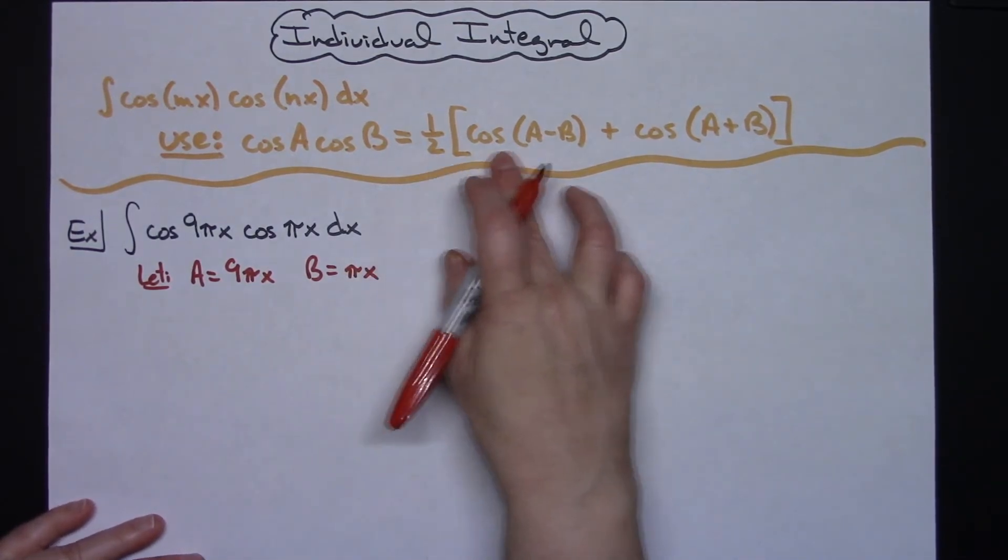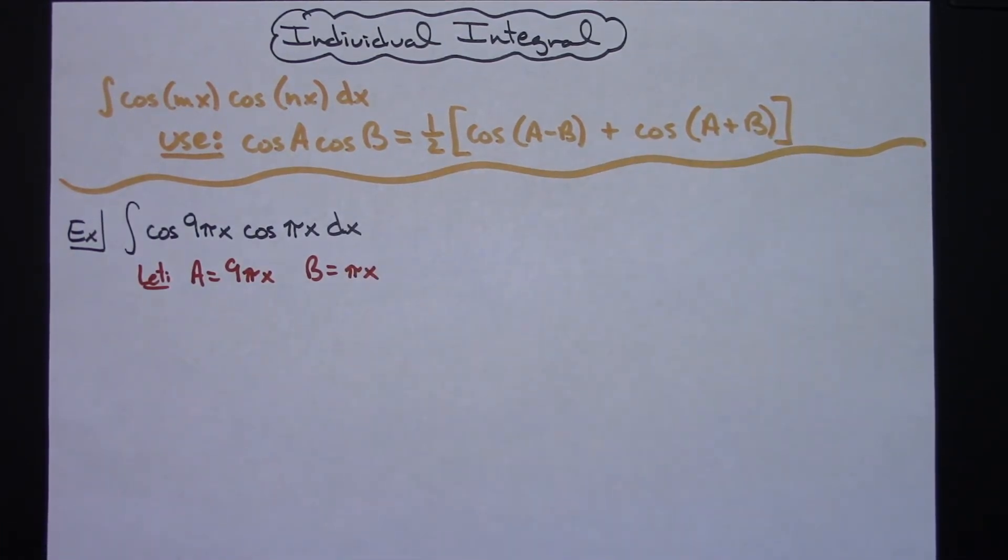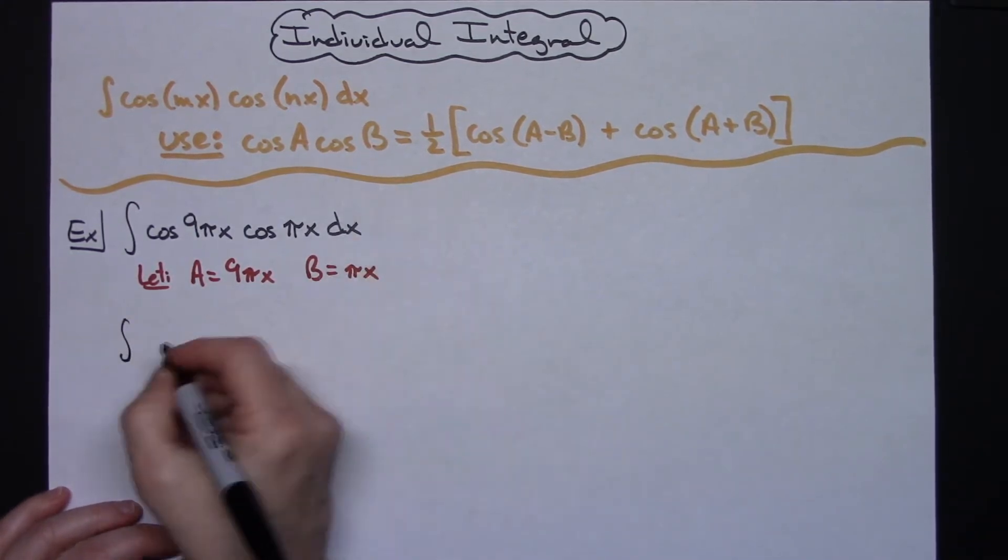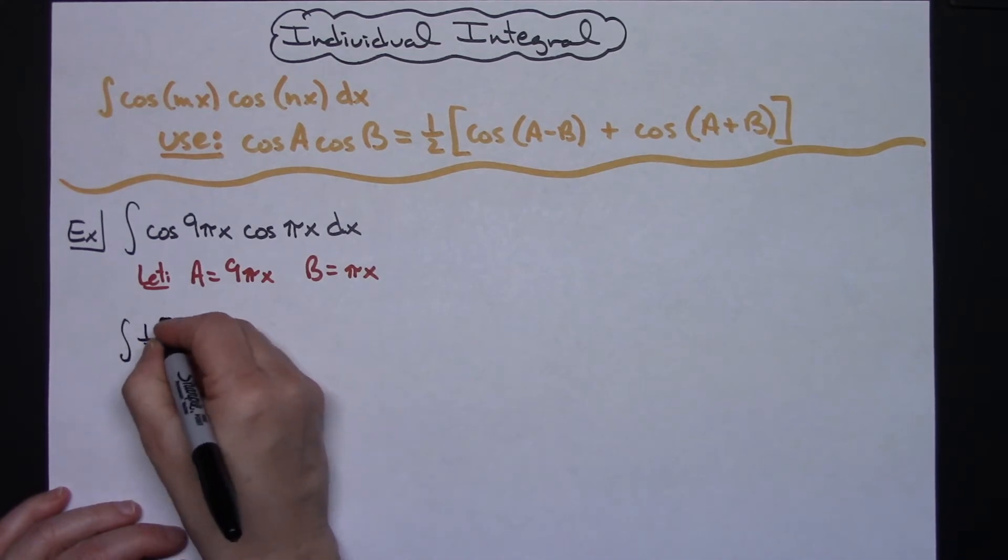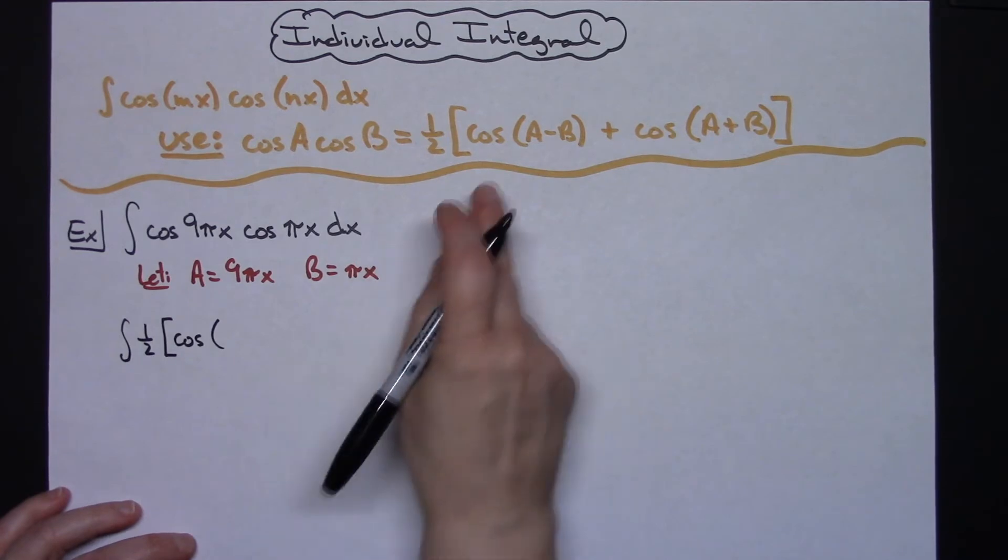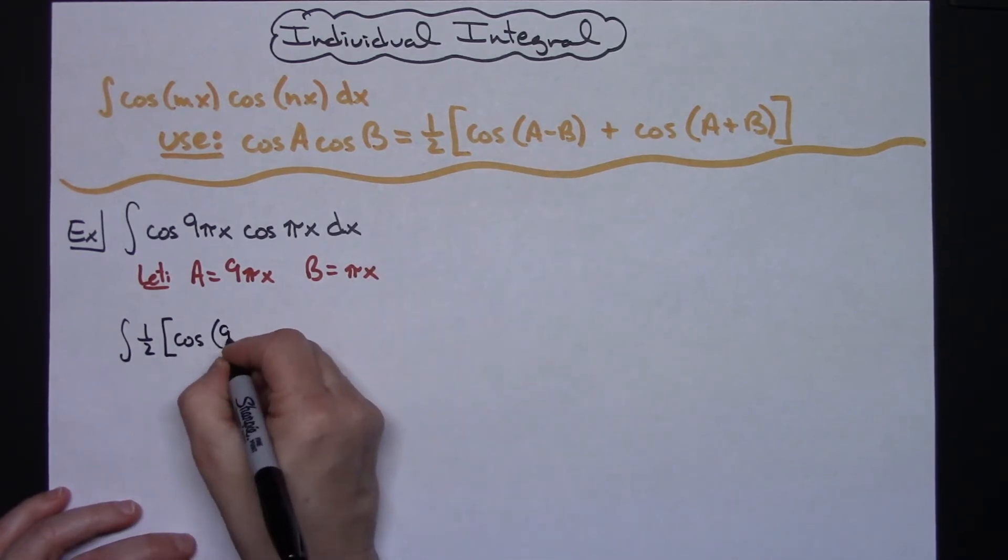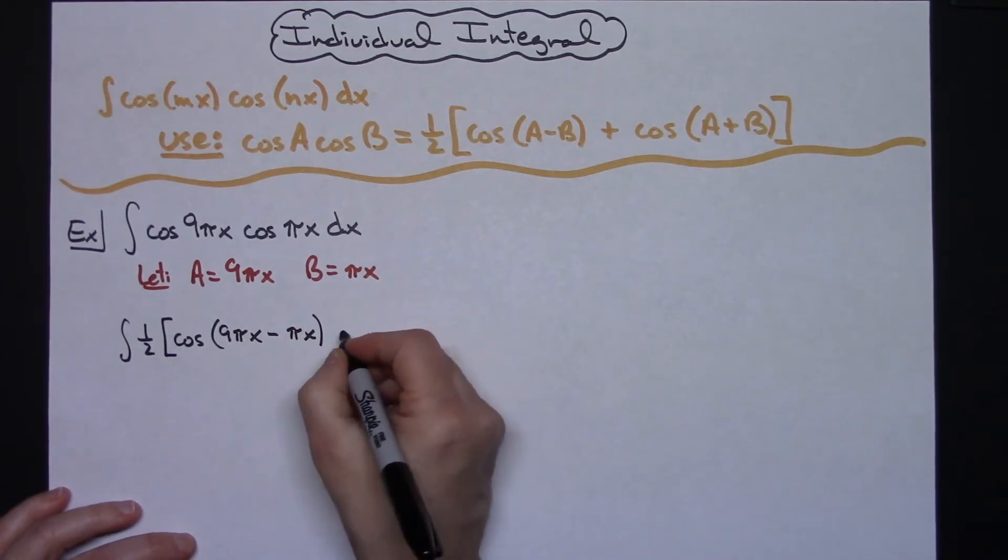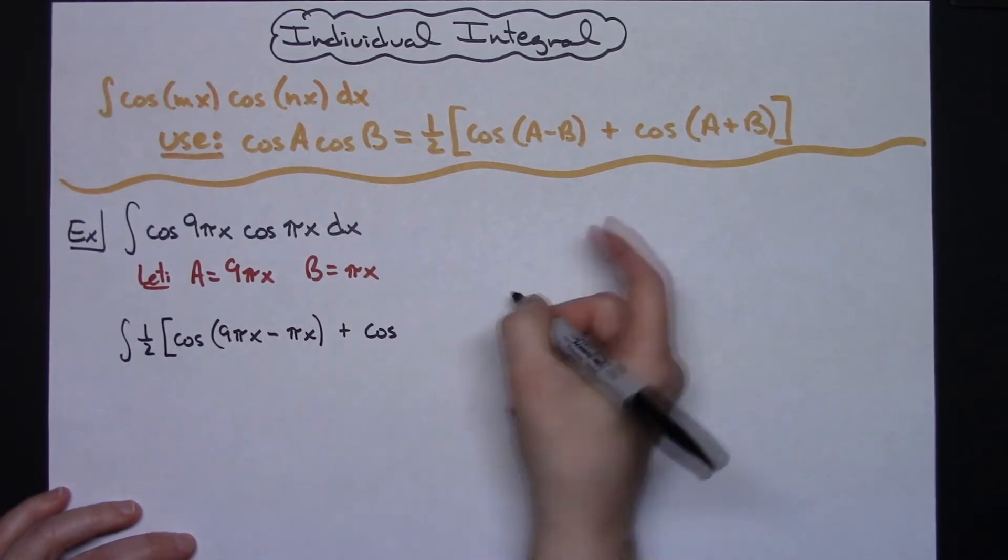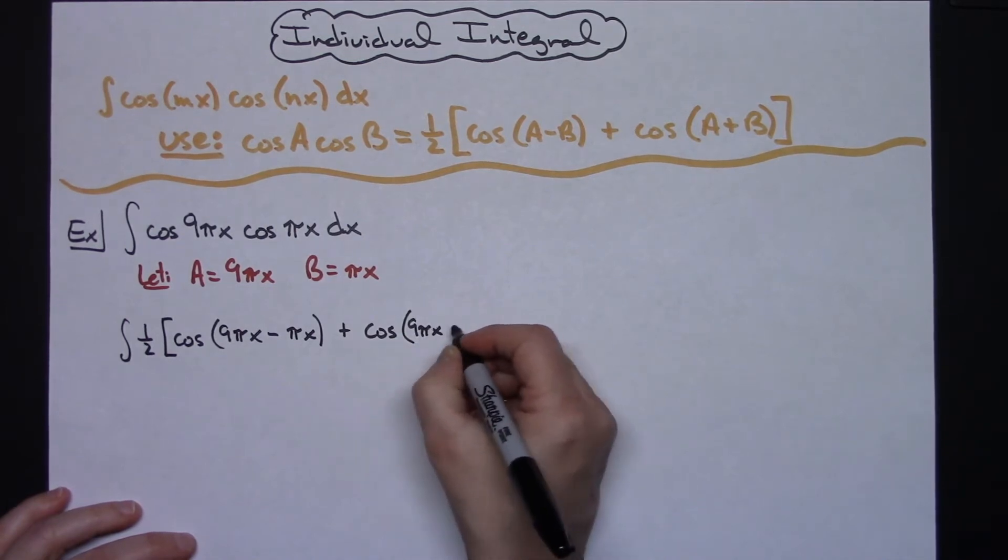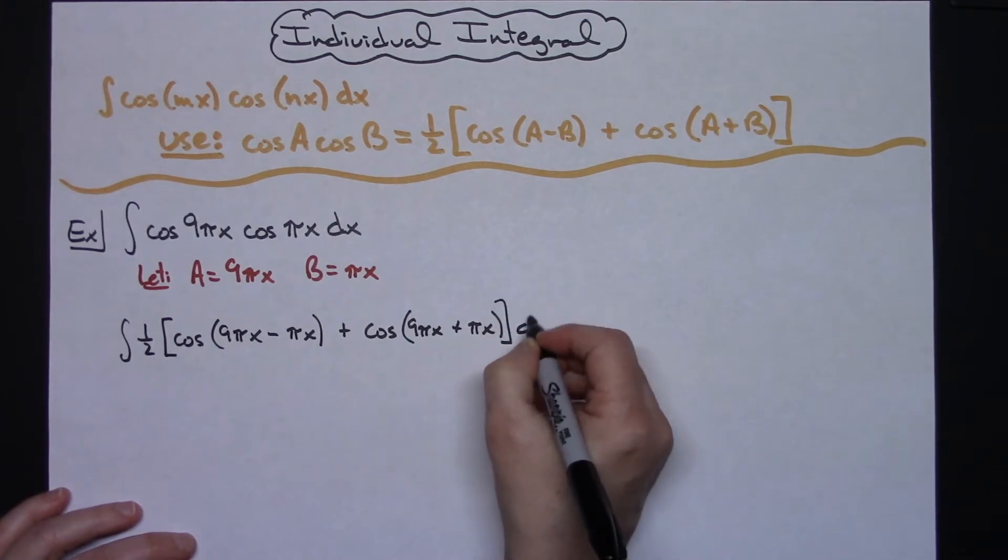After that substitution I'm going to implement this formula so I can change my integral. I'm going to have the integral of one half times cosine, and I'll take A minus B, so I'll have 9πx minus πx, and then plus cosine A plus B, so I'll have 9πx plus πx, and then dx.